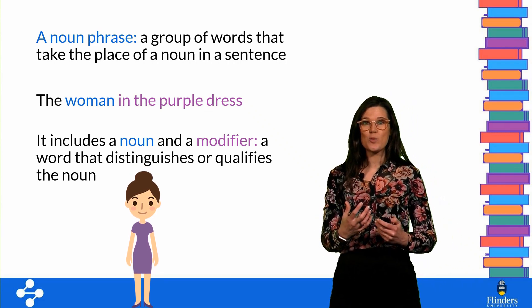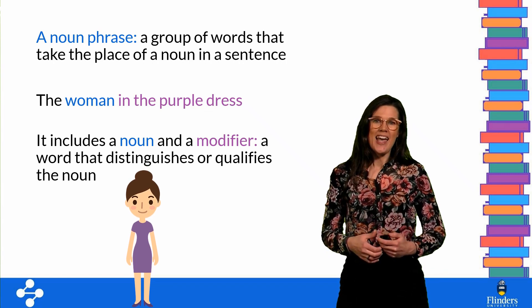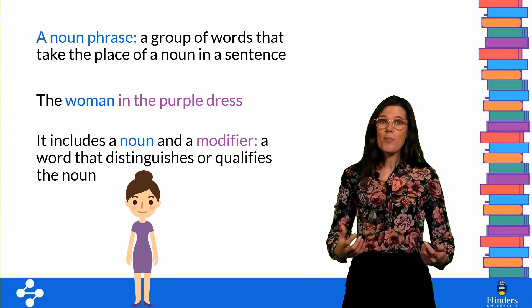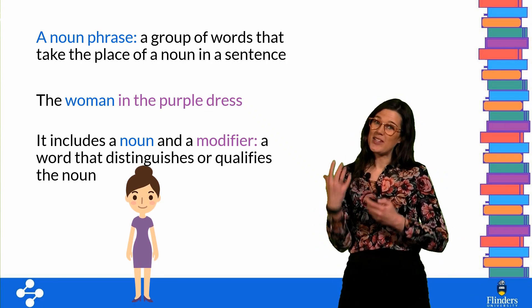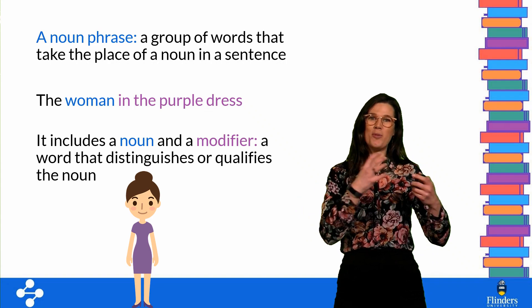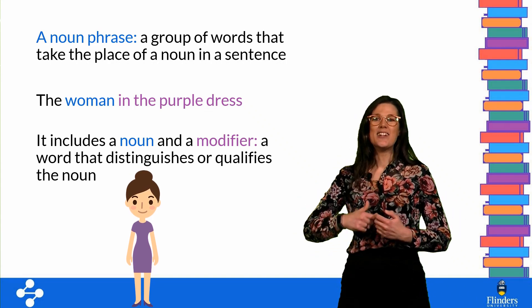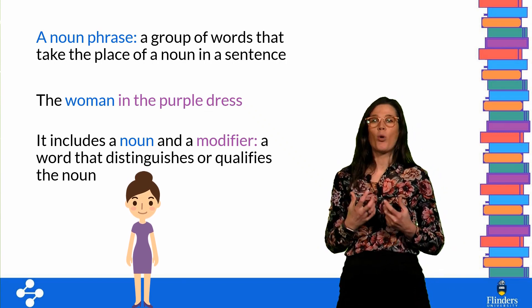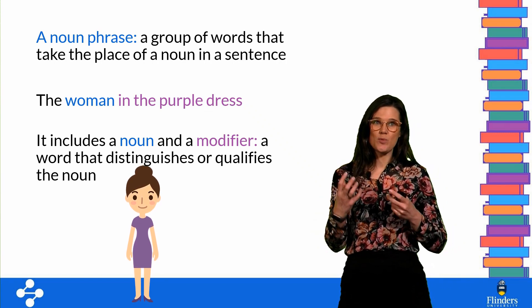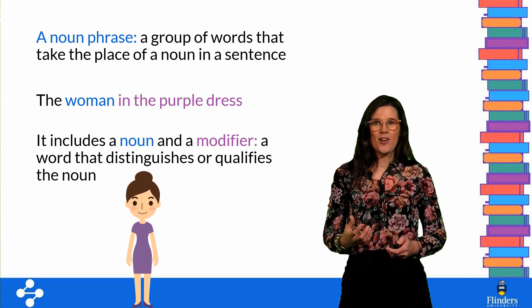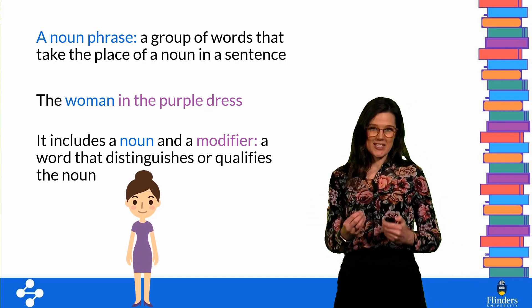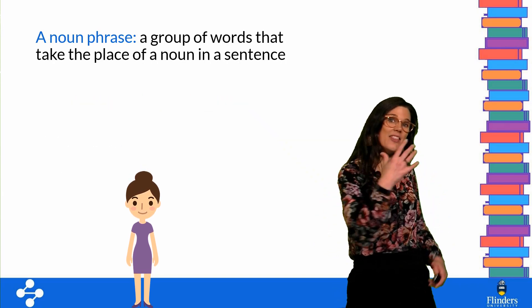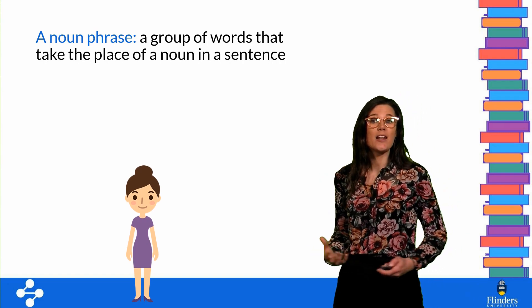It also includes some modifying information. Modifiers are words like adjectives and adverbs that help add extra information to describe or qualify that noun. So in this case, 'in the purple dress' — we've got a preposition, an article, a noun, and an adjective to help us understand more about who this woman is. Remember, it's not just any woman; I'm specifically wanting to distinguish the woman in the purple dress.